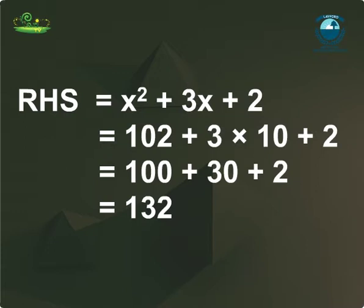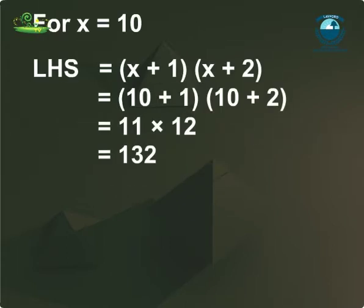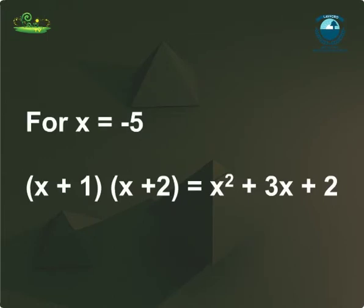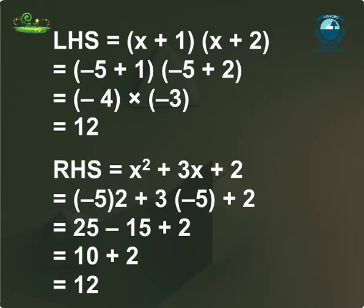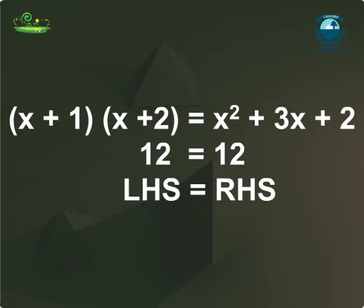Similarly, putting x=10 in the right-hand side, we get 100+30+2, that is 132. Thus, the two sides are equal for x=10. Let us now take x = -5. Putting the value of x in LHS and RHS, we get LHS = 12 and RHS = 12. Thus, for x = -5, LHS is equal to RHS.